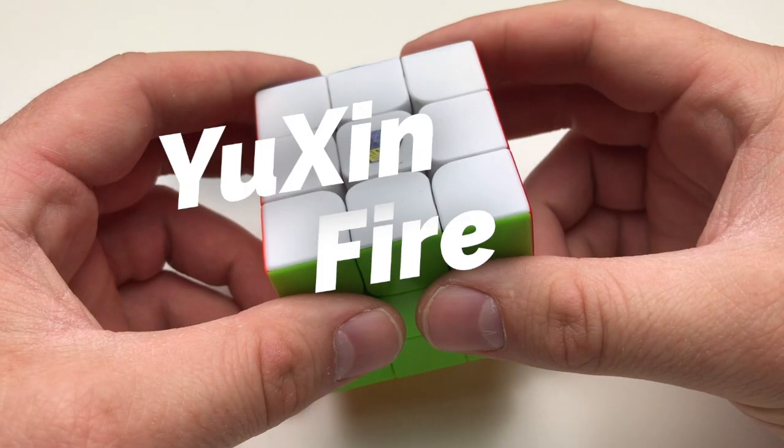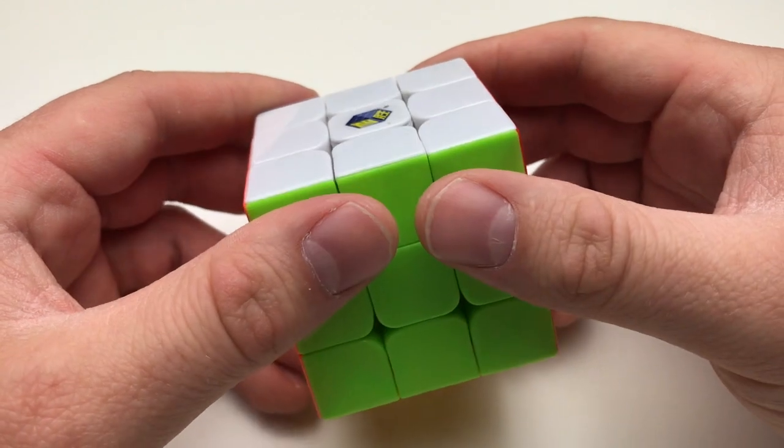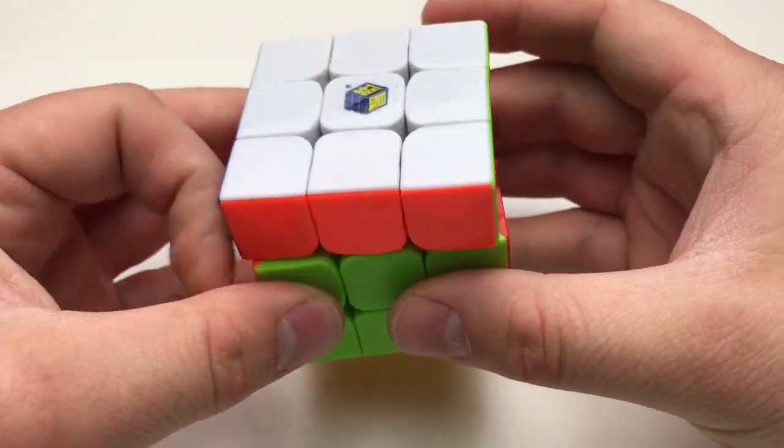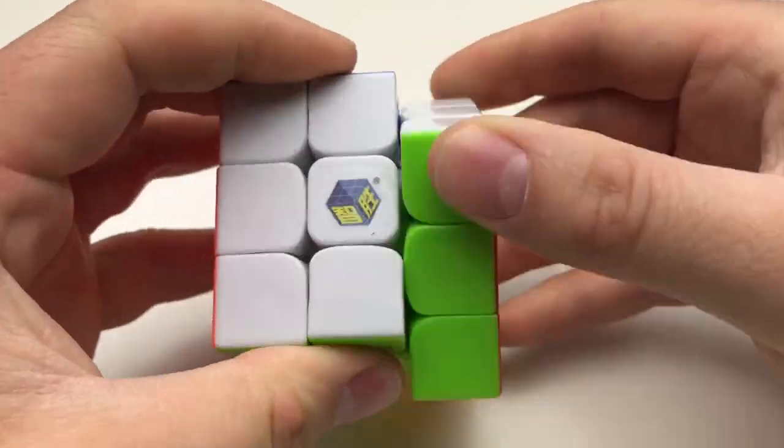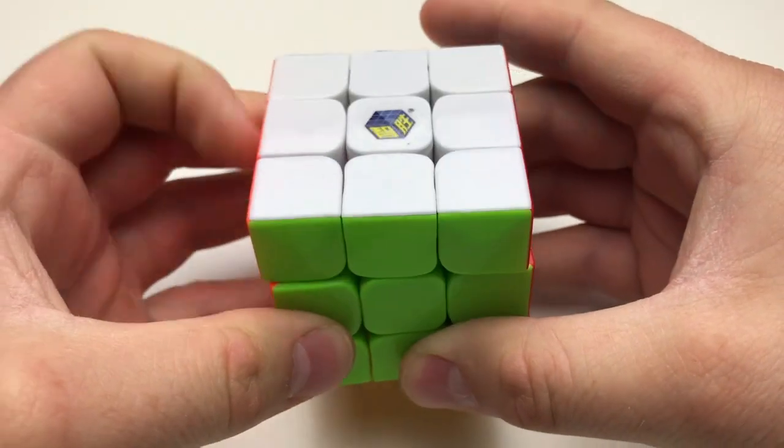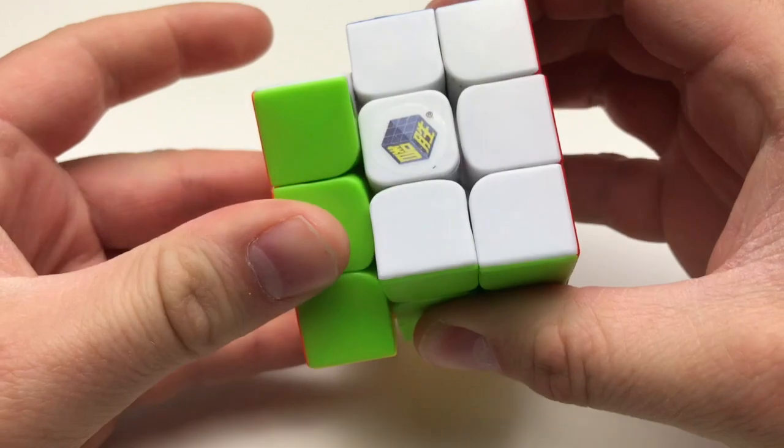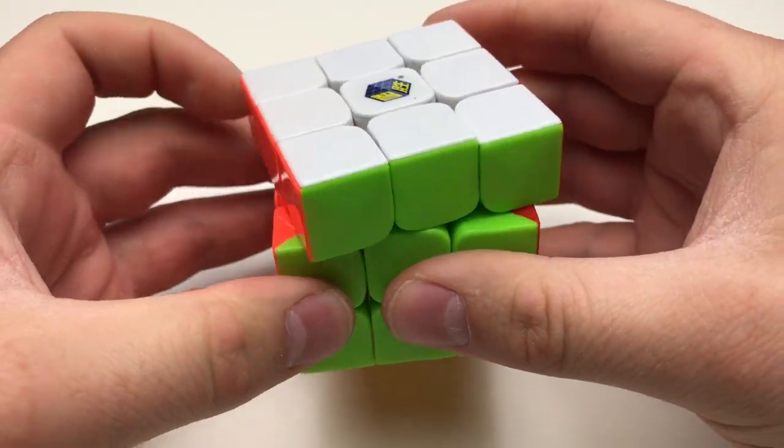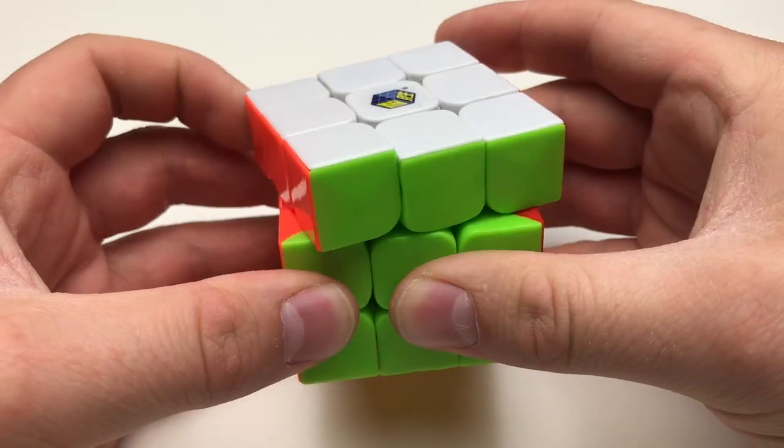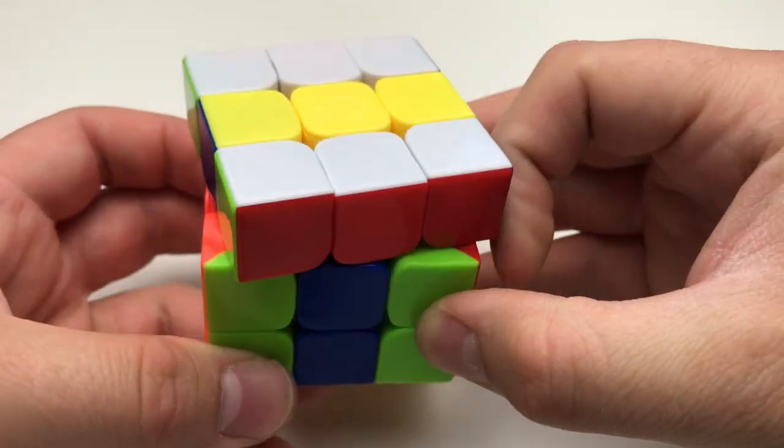So next here I have the Yushin Fire. Let me save you the time. This puzzle is absolute garbage, in my opinion. It feels very cheap. Piece separation is non-existent. Corner cutting is barely at the 10-degree mark, and it turns like it was lubed with sand.